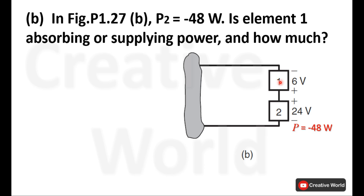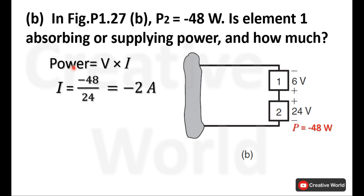If we know the current through element 1 we can calculate its power. If we calculate the current of element 2, the same current will pass through element 1. For the calculation of current for element 2, we have both power and voltage. Using the power formula and entering the values — minus 48 watts supplied and voltage 24 — we get a current of minus 2 amperes.